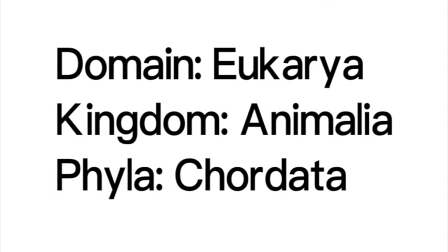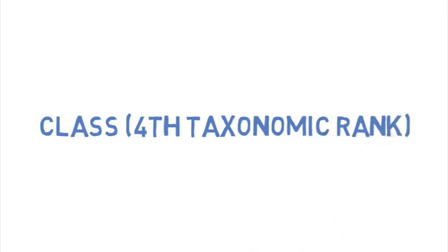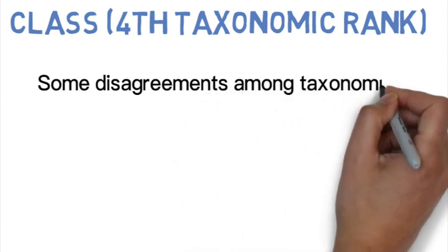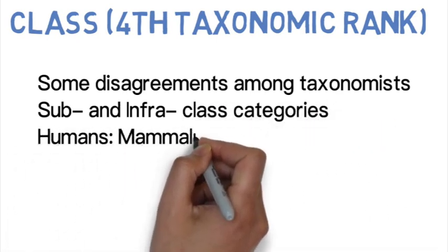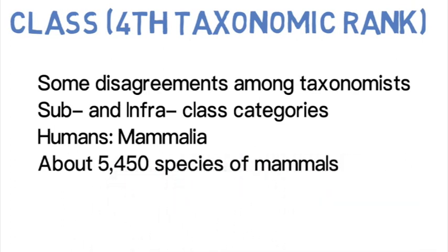Chordata, or chordates, refers to organisms that all possess a notochord; in humans the notochord becomes our vertebral column — our spinal cord — during development. The fourth taxonomic rank is class. Humans are within the class Mammalia, or mammals, which includes about 5,450 different species. One of the key characteristics connecting all mammals is the presence of mammary glands, which in females produce milk to nurture the young — in humans known as breast milk.